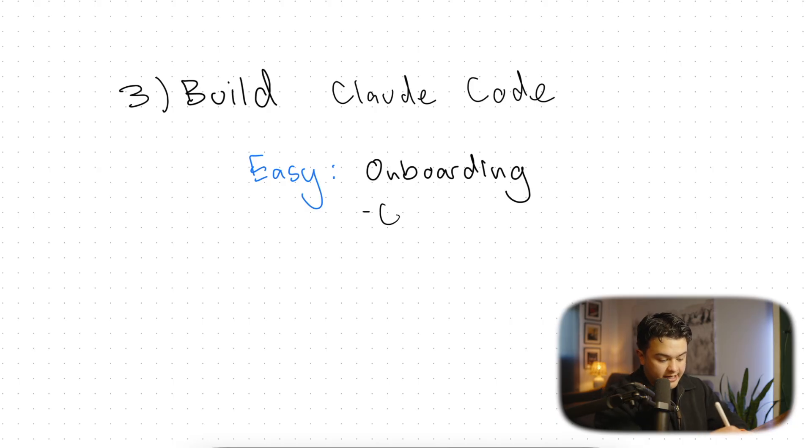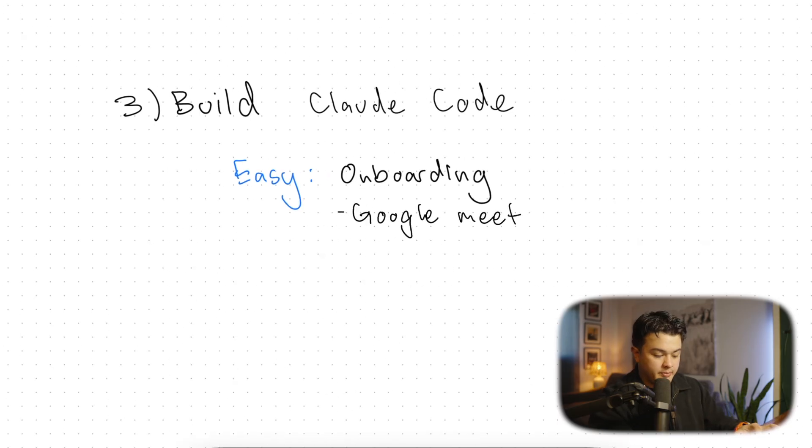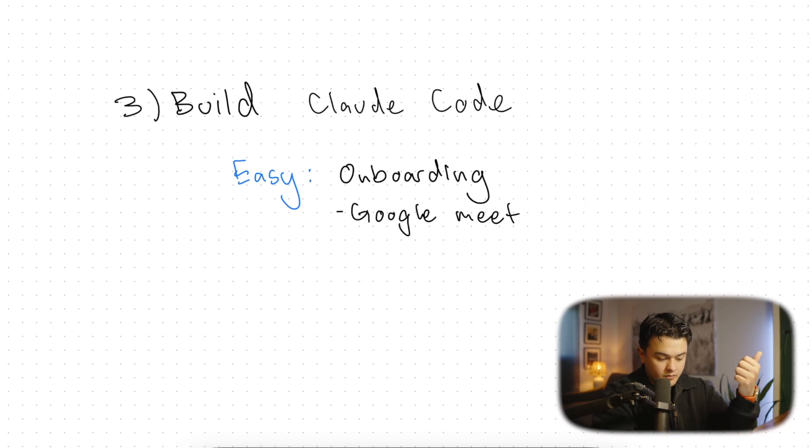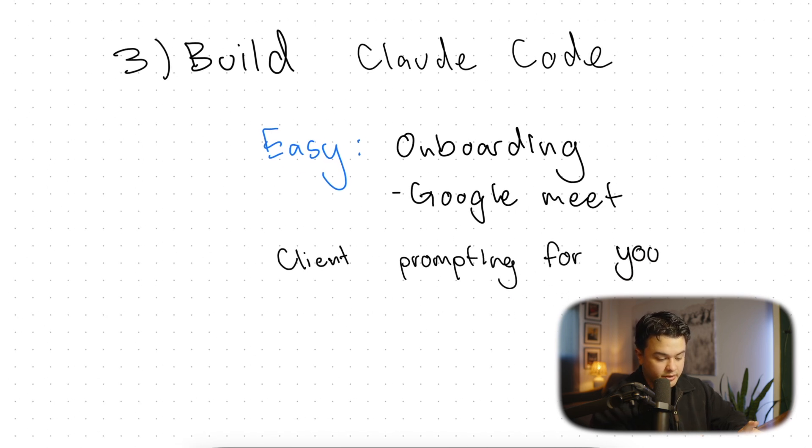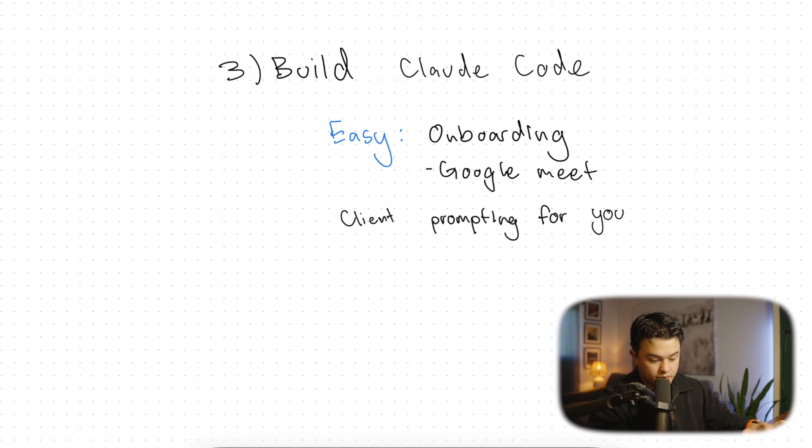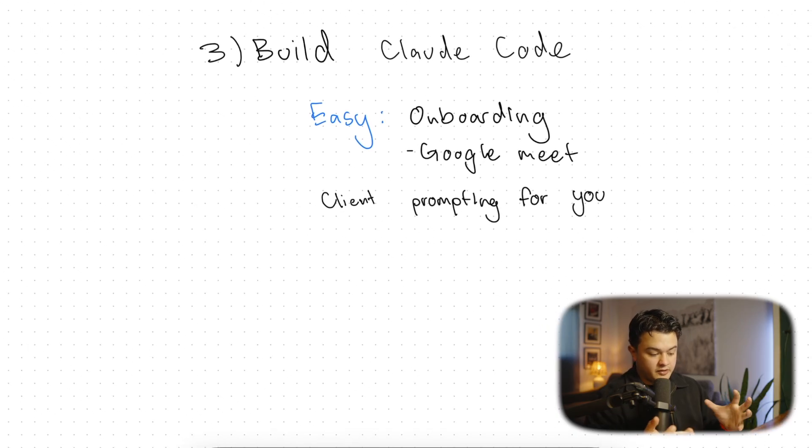You are going to have this call on Google Meet because Google Meet you can get free transcriptions with Gemini. You can turn on a meeting recording, you can have Gemini transcribe the entire meeting and generate you an AI summary. The amazing part is that the client is practically prompting for you. This makes it incredibly easy to start to build their app. This onboarding call is crucial.